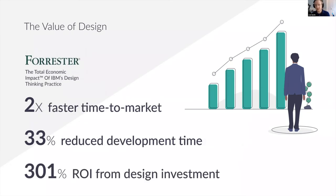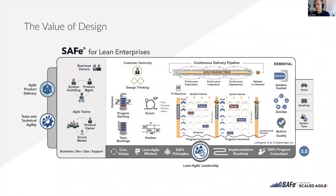More relevant to engineering teams is some work that Forrester does. Forrester has great economic impact studies they do with organizations. IBM, about five to seven years ago, made a huge investment in design, and they worked with Forrester to identify the impact that had — they were able to correlate that investment with strong business outcomes. Recently, if anyone knows the Scaled Agile Framework for Enterprise, their 5.0 version came out in January, and they started adding pieces that designers had been advocating for in product development. We're getting validation from frameworks like SAFe that yes, this is an important part of the process — not something on the outside that may be a nice-to-have.